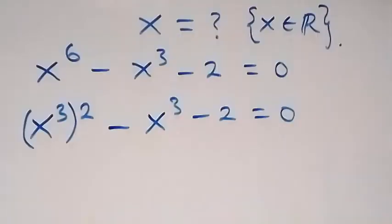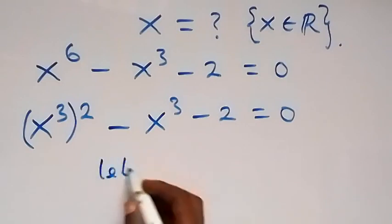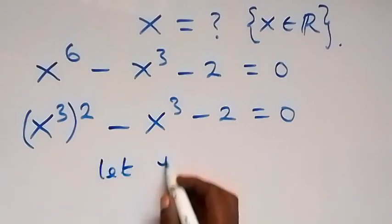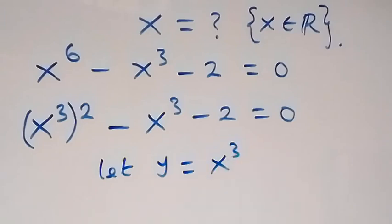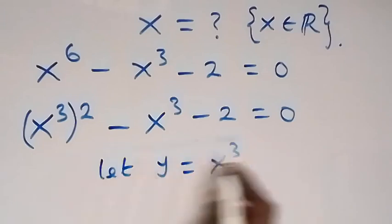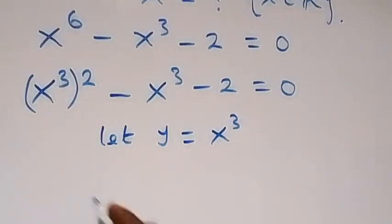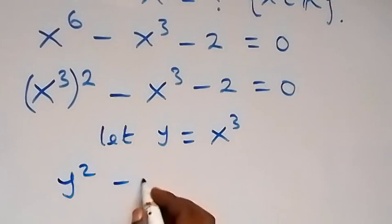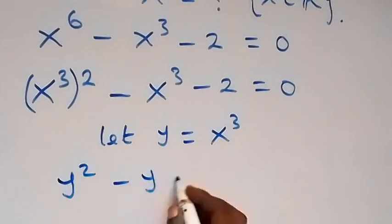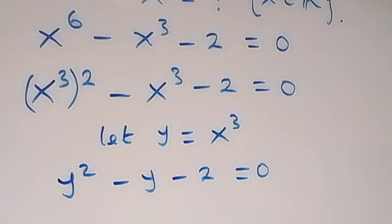From here, we have x raised to power 3 in common. So let a letter y be equal to x raised to power 3. Then this equation becomes y squared minus y minus 2 equals to 0.